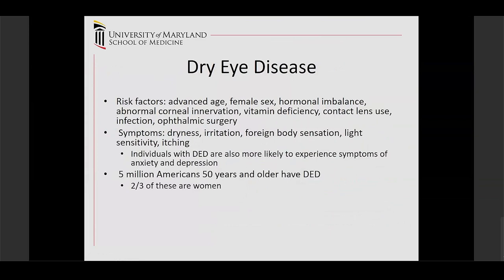Dry eye disease has a number of risk factors, including older age, female sex (women have more dry eye disease than men), hormonal changes, abnormal corneal innervation, vitamin deficiency, contact lens use, infection, and history of ophthalmic surgery. Symptoms include dryness, irritation, foreign body sensation, light sensitivity, and itching. These patients have been shown to have higher associations with anxiety and depression. This affects 5 million Americans over 50, and two-thirds of them are women.